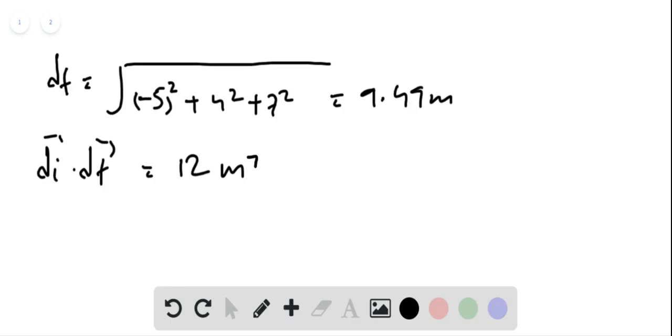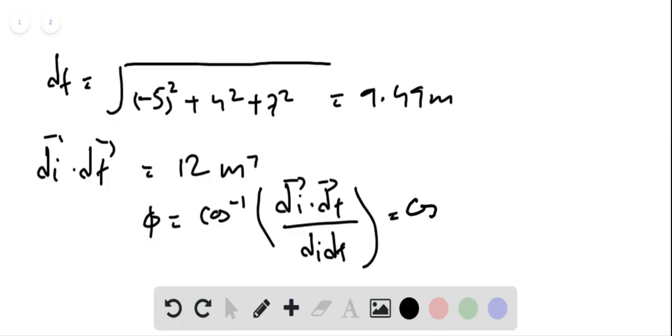Then the angle between these two vectors can be written as phi equals cos inverse of di dot df, the dot product of these two vectors, divided by the magnitude di times df. And this is cos inverse of 12 divided by 6.16 times 9.49. This gives us an angle of 78.2 degrees.